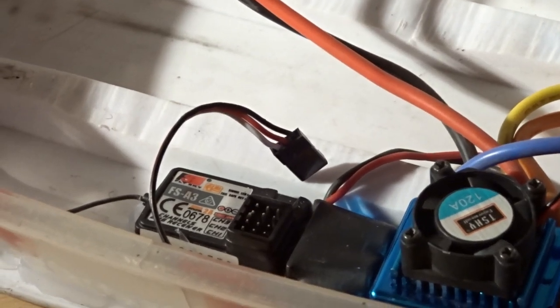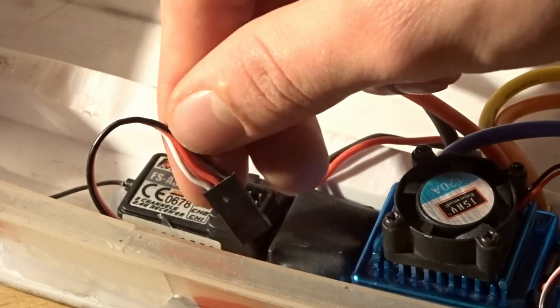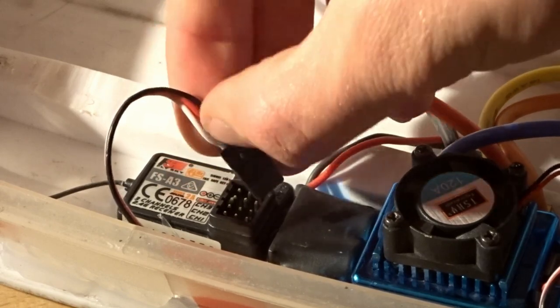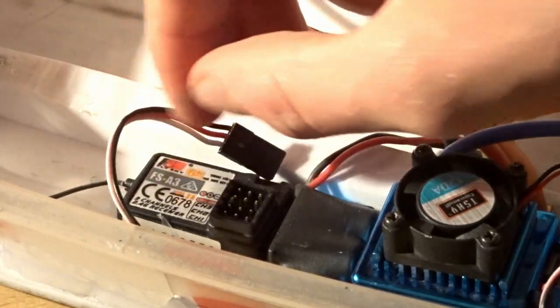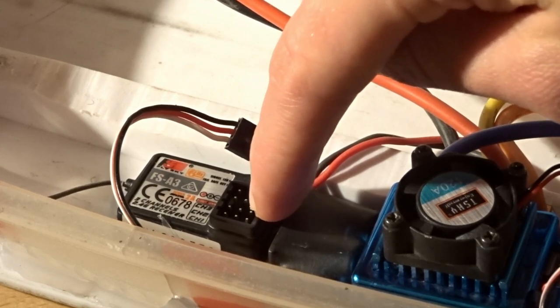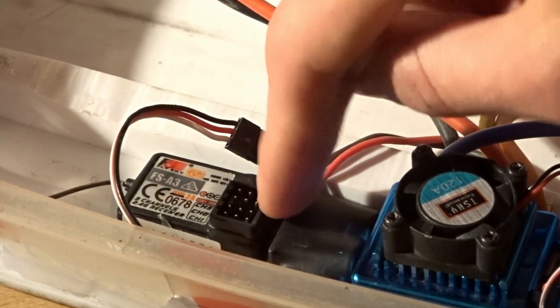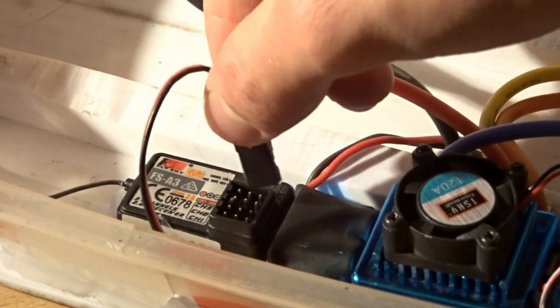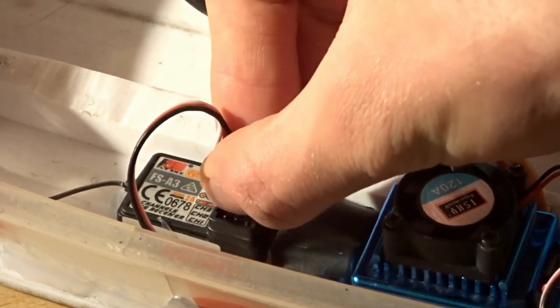With your ESC comes a little connector plug like this one: red obviously for positive, black for ground, and white for signal. This is your receiver, and the second channel here is used for speed control, so you're gonna connect your plug to the second channel like this.